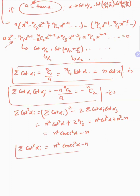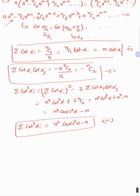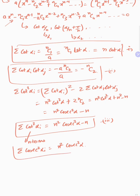One more result before ending this video: if I bring this n to the left-hand side and use 1 + cot²α = cosec²α, then since there are n terms, adding 1 to each cot² gives cosec². So sigma cosec²(αᵢ) = n²·cosec²α. This is a wonderful result: cosec²(α/n) + cosec²(α/n + π/n) + cosec²(α/n + 2π/n) + ... till n terms equals n²·cosec²α.